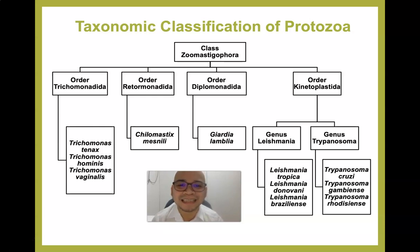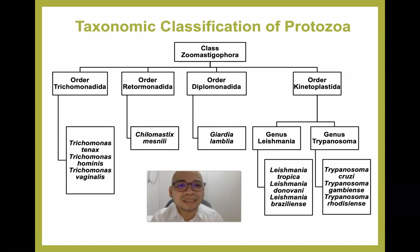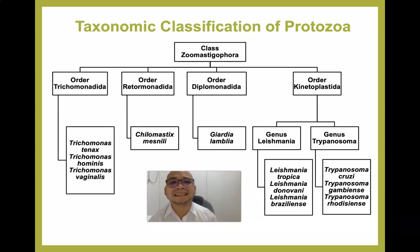Under order Diplomonadida we have Giardia lamblia, which has a distinguishing characteristic described as looking like an old man wearing eyeglasses. Under order Kinetoplastida we have the genus Leishmania — L. tropica, L. donovani, and L. braziliensis — and the genus Trypanosoma, including T. cruzi, T. gambiense, and T. rhodesiense, which we will discuss in the finals.